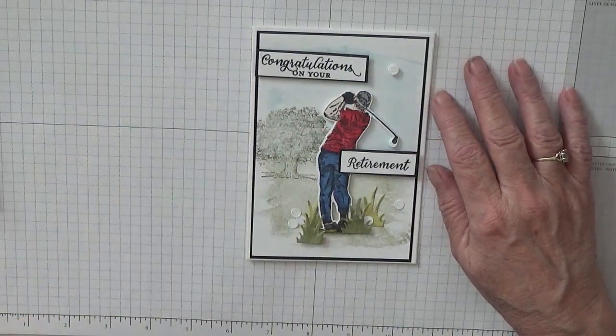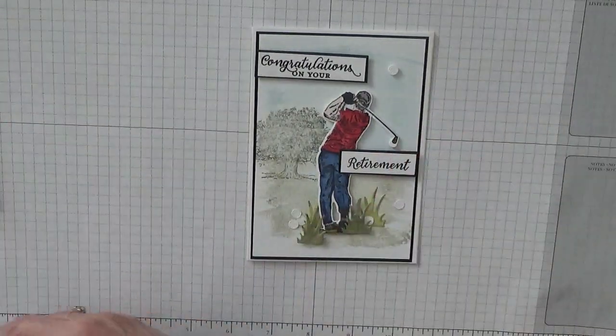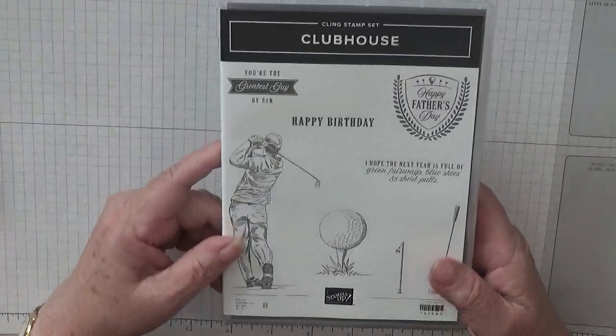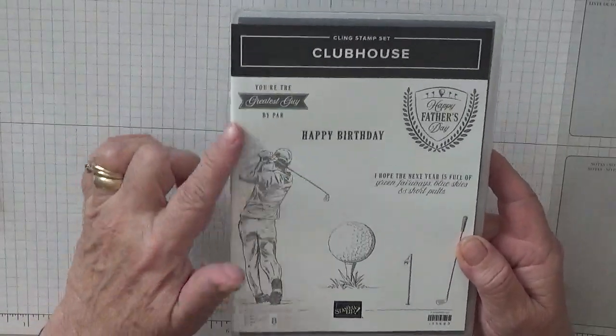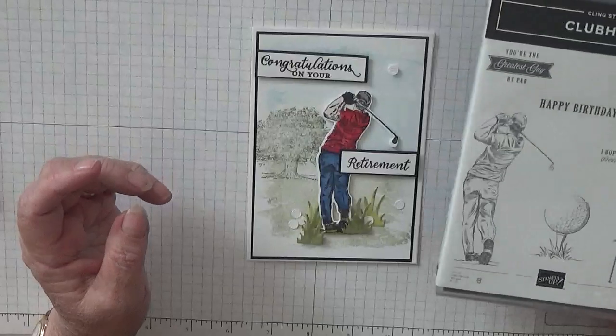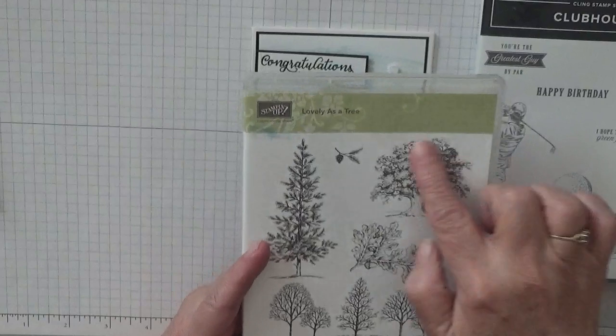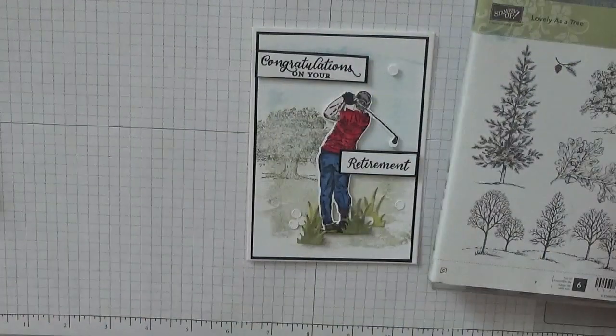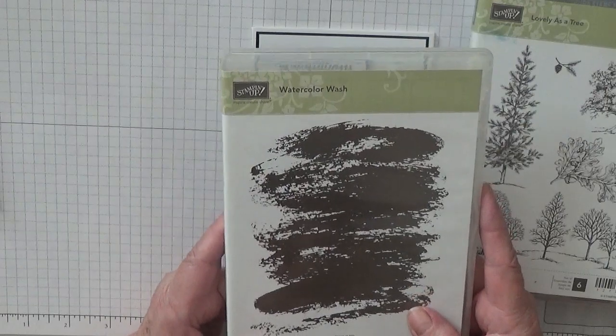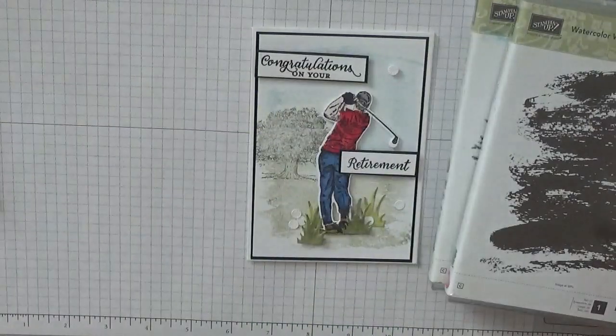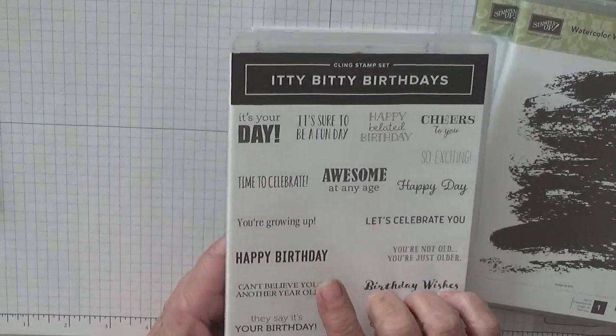Hi Georgie Burns here. Today I'd like to show you how I made this card. This card I made using the new stamp set Clubhouse and I'm going to be using the golfer. I also used a retired stamp set Lovely as a Tree and we're going to use the oak tree background stamp, watercolor wash, and I'm using Itty Bitty Birthdays as I'm going to make it into a birthday card.